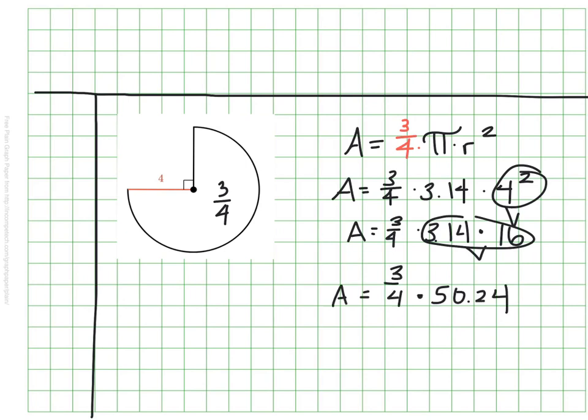So I know that the entire circle would have been just over 50 square units, but I just want three-fourths of that. So I could multiply that by 0.75, divide it into four sections and use three of them, or multiply the number by the fraction three-fourths. And either way, I get a little over 37 square units.